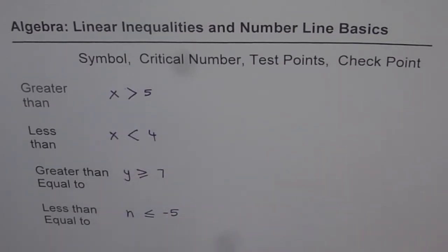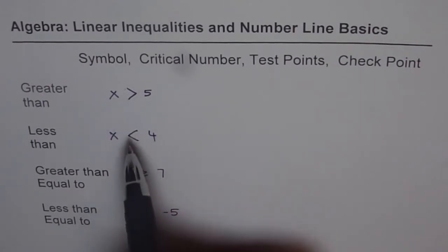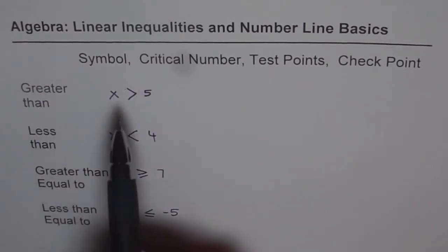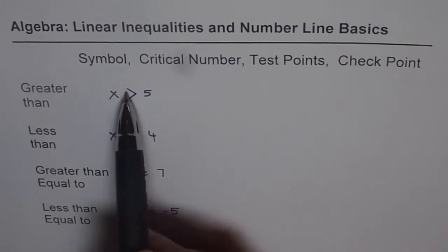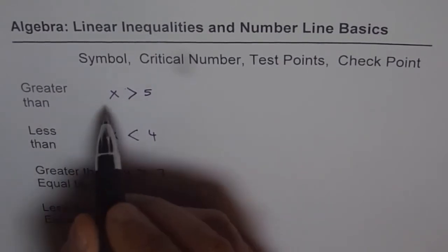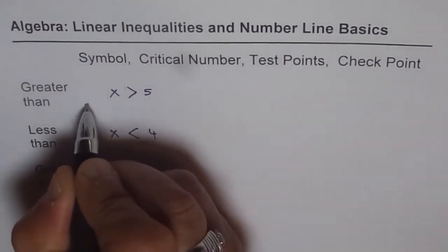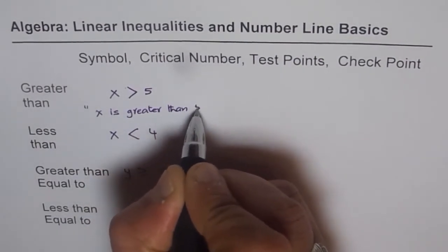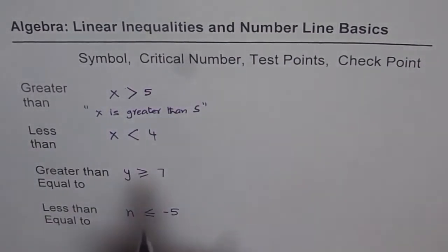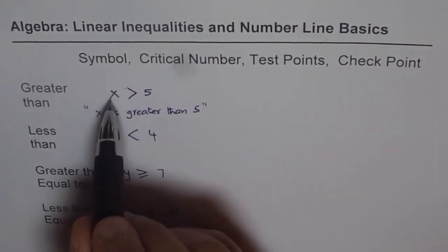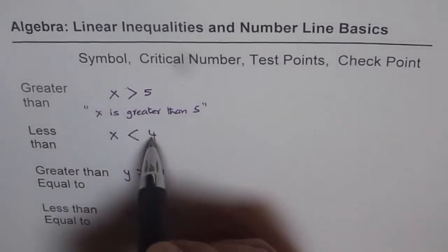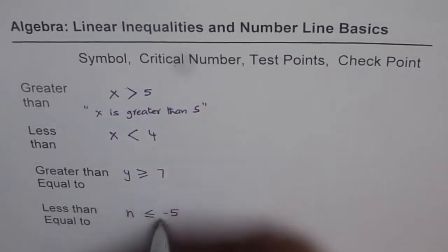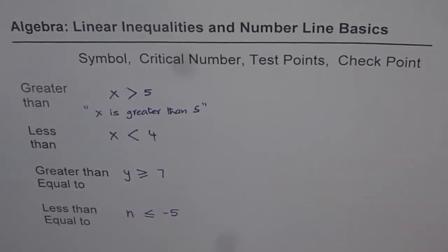When we solve an inequality, we are at present doing inequalities in one variable, so we try to keep the variable on the left side. The numbers like 5, 4, 7, and minus 5 are called critical numbers. A critical number is the number that makes or breaks the inequality — it is critical. We are checking the value of x with respect to that critical number.